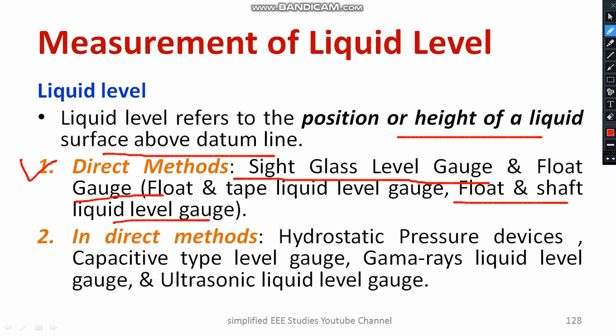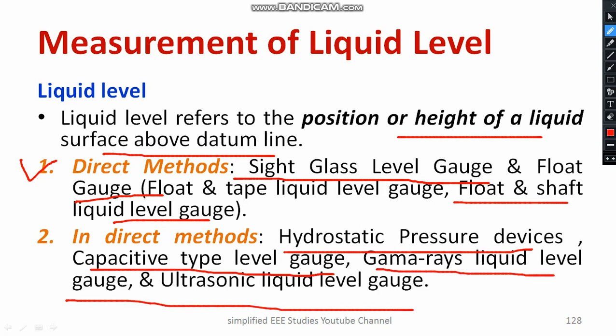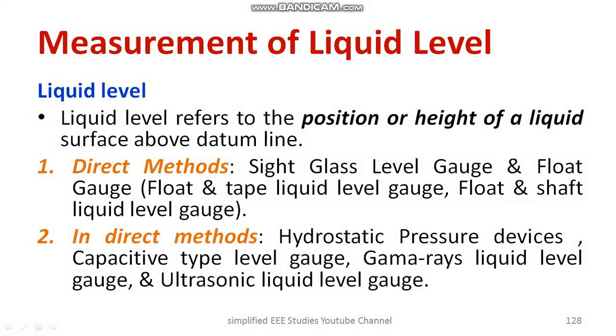If the liquids are too risky, or if the area of work or location is not admissible, you can go ahead with the indirect method of measurement. There are different types of indirect methods such as hydrostatic pressure devices, capacitive type level gauge, gamma ray liquid level gauge, and ultrasonic liquid level gauge. I will be mainly focusing on the indirect method of measurement of liquid level.